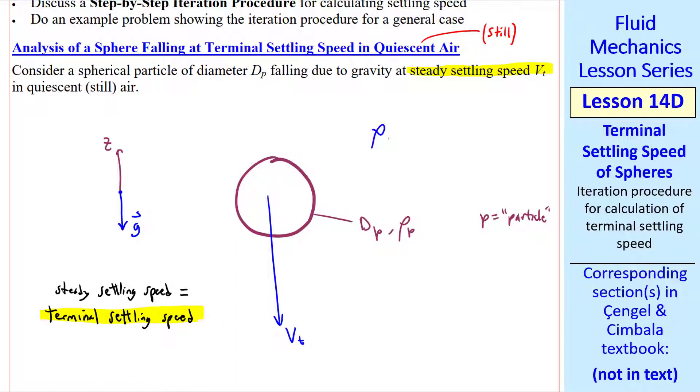The sphere is surrounded by air with density rho and viscosity mu. And since there's no acceleration, sigma fz equals zero. Let's look at all the forces on this sphere. There's a gravitational force, which equals the weight of the body. There's an aerodynamic drag force. And there's a buoyancy force, which is due to the displaced air as discussed in a previous lesson.